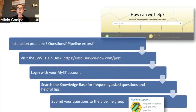Where do you go if you have questions? If you are trying to install the software or aren't sure what to do or have problems, you can visit the JWST help desk. You would log in with your MyST account or you can create one from the landing page. A good place to start is to search the knowledge base for frequently asked questions. A lot of the Institute folks have written articles for questions that come up most often, but if you don't see what you need there, you can always submit your questions.